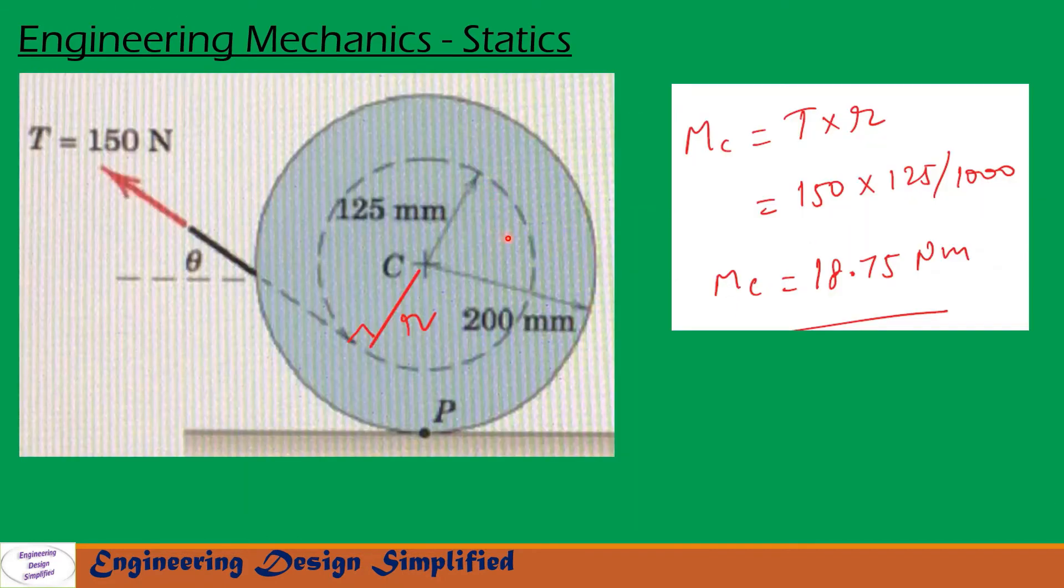Let's see the first portion of the problem. We need to find moment about C due to this load T. The radius of this inner circle is 125 millimeter and T is applied tangent to this inner circle. So moment due to T about C will be T into this radius. That is written here: mc equal to T into r. So T is 150 newton and r is 125 millimeter, divide by thousand to convert this into meter. So mc equal to 18.75 newton meter.